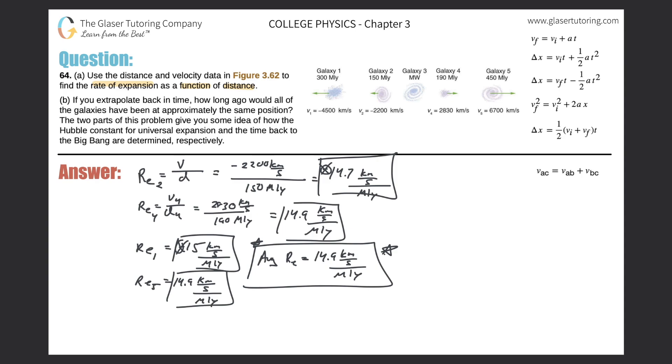This is the value we're going to use to help us solve part B. This is the function that gives us the rate of expansion, the rate at which the galaxies are expanding per distance or million light year. Now for B, it says if you extrapolate back in time, how long ago would all the galaxies have been approximately at the same position? Let me reframe the question. Let's say the galaxies are moving away at a rate of 14.9 kilometers per second. I ask you, given this rate of expansion, how long would it take to travel 1 million light years?